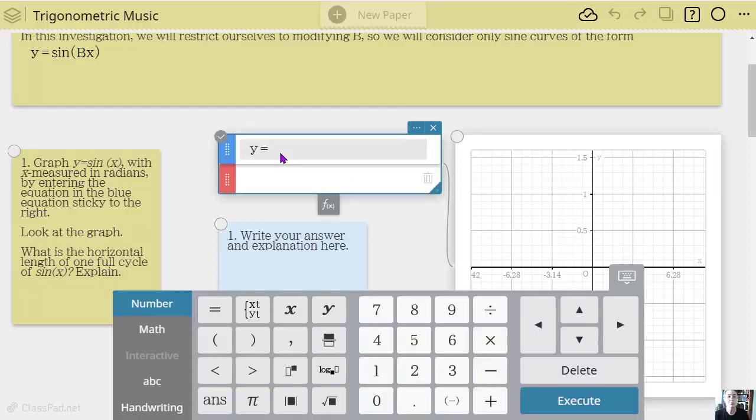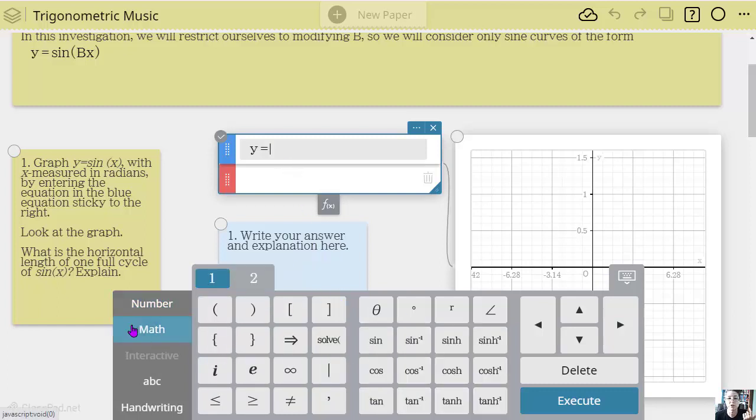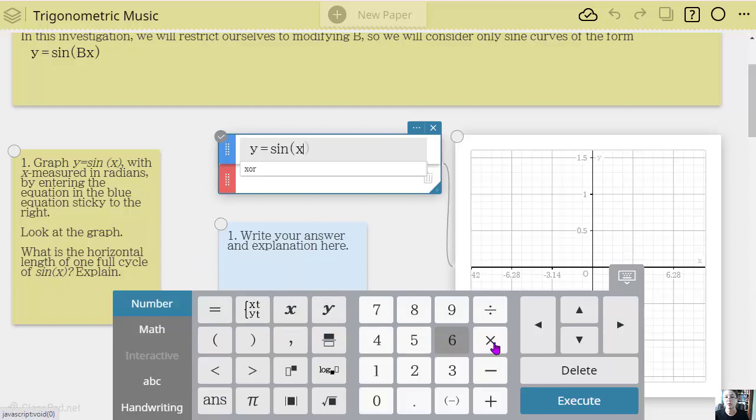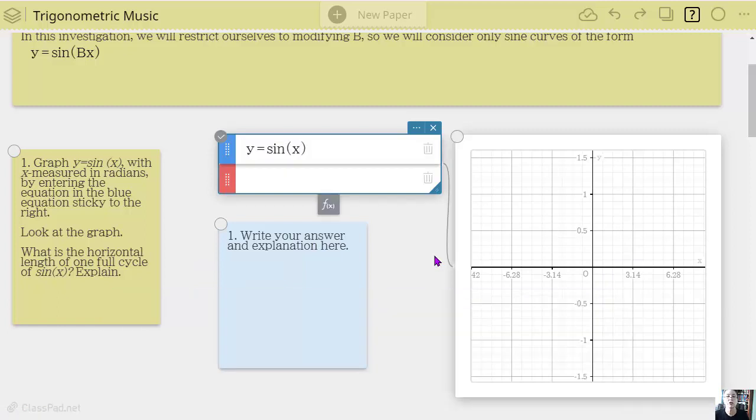We're going to type in y equals, and to get the sine, I could type it in but I could also use the templates here. Under math you'll see sine, and it automatically creates the parentheses for me. I'm just going to put in my x, then hit enter, and there is my sine wave.